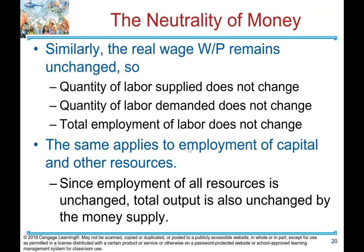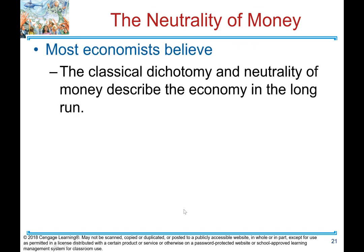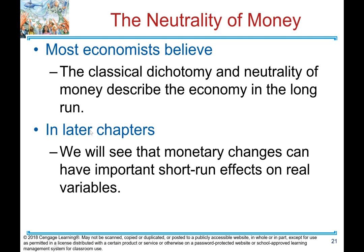Similarly, the real wage W over P remains unchanged, so the quantity of labour supplied and demanded does not change, and total employment and output do not change. The same applies to employment of capital and other resources — total output is unchanged by the money supply. Most economists believe the classical dichotomy and neutrality of money describe the economy in the long run. In later chapters, we will see that monetary changes can have important short-run effects on real variables.